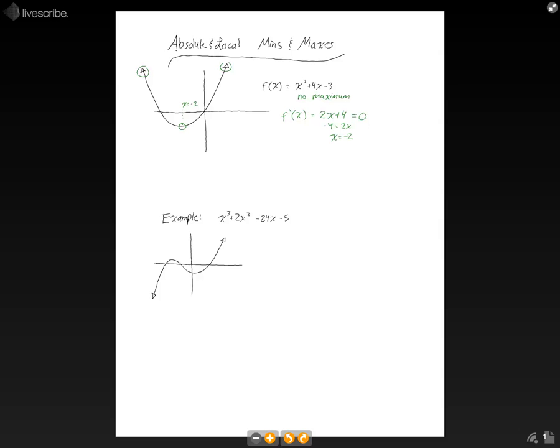Now, to find the y-coordinate, we're going to take this number and plug it back into the original function. We're going to say that y equals negative 2 squared plus 4 times negative 2 minus 3. Negative 2 squared is 4 minus 8 minus 3 gives us negative 7. So the coordinates of that point there are negative 2, negative 7. And that is how we find the minimum of this function.